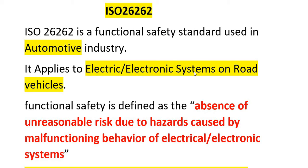ISO 26262 applies to electric or electronic systems for on-road vehicles. As per ISO 26262, functional safety is defined as the absence of unreasonable risk due to hazards caused by malfunctioning behavior of electrical or electronic systems. Here, hazards refer to harm to the passenger, driver, or vehicle caused by unintended errors or system failures in electrical or electronic systems.